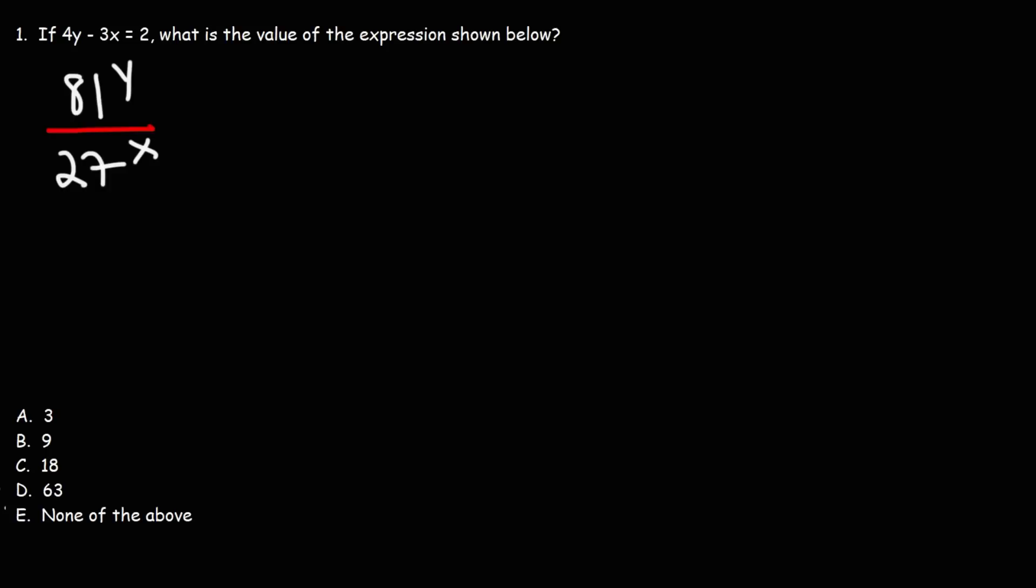How would you solve this problem? If 4y minus 3x is equal to 2, what is the value of the expression shown below? And that expression is 81 raised to the y over 27 raised to the x. Well, the way to solve it is to rewrite it.